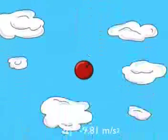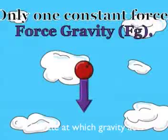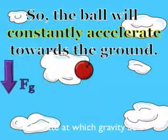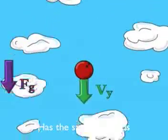9.81 meters per second squared is the rate at which gravity acts. Vertical motion has the same methods as horizontal equations, equations and facts.